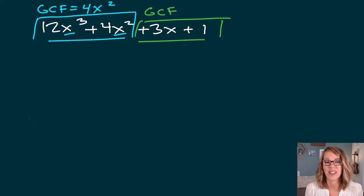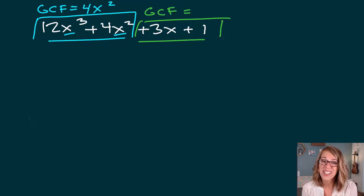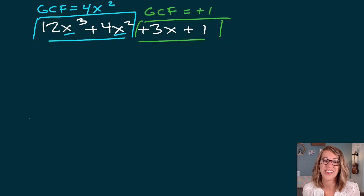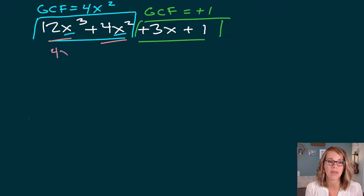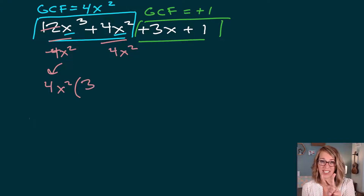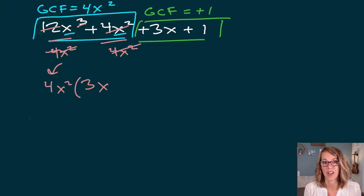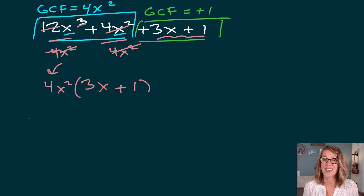Now let's look at the green pair: what goes into both 3 and 1? Nothing other than 1, and they don't share an x. I need the number 1 as a placeholder — a positive 1. Dividing the first pair by 4x squared: 12 divided by 4 is 3, and canceling two x's from x cubed leaves a single x. The 4x squared over 4x squared cancels completely, giving us 1. So we have 3x plus 1.